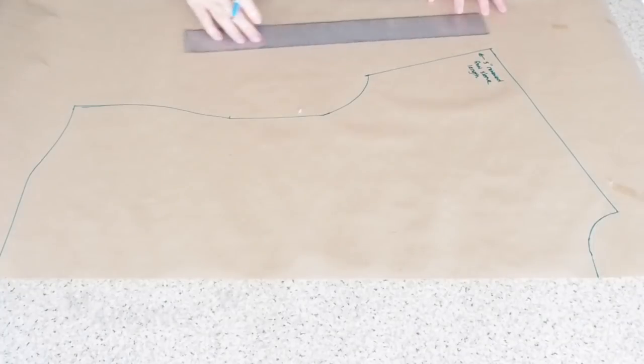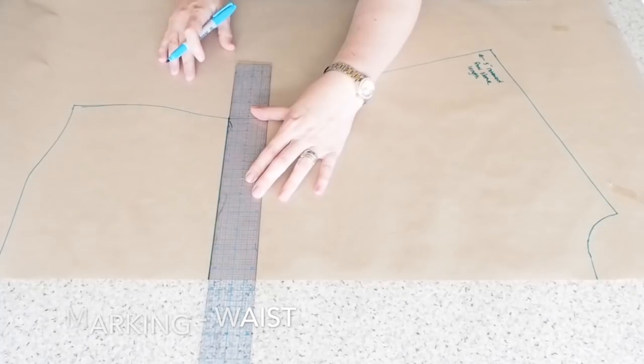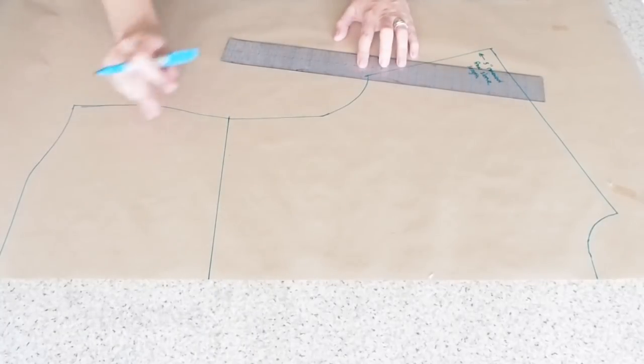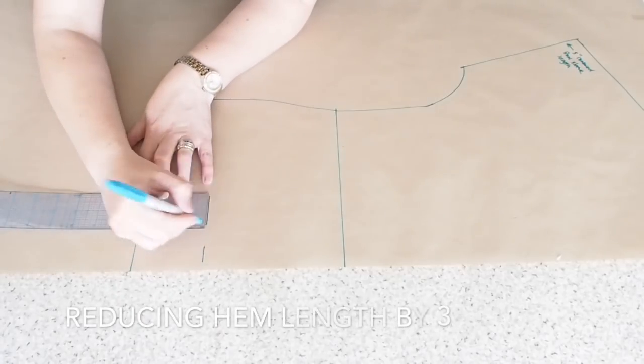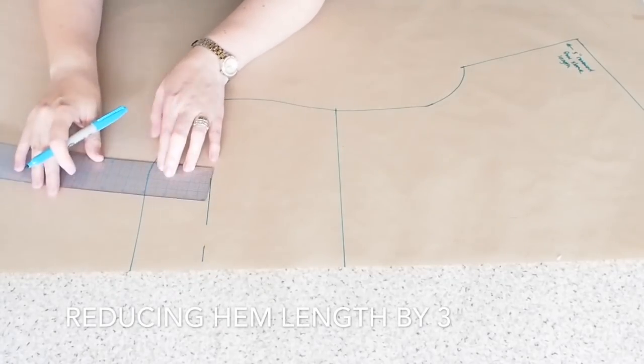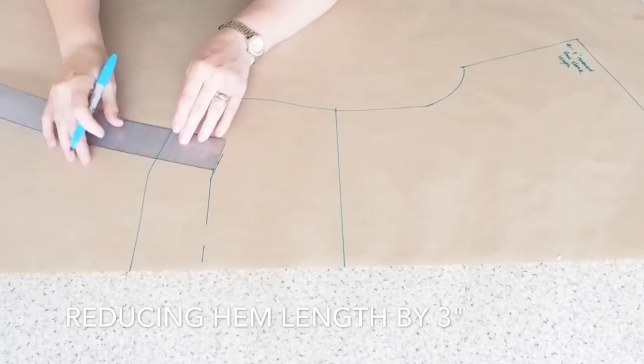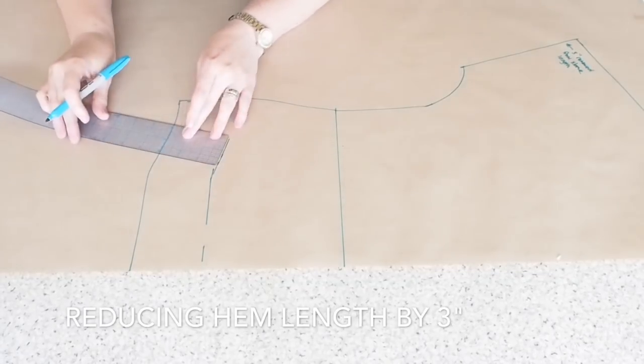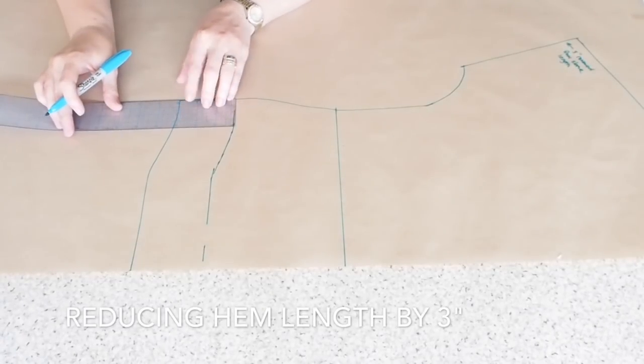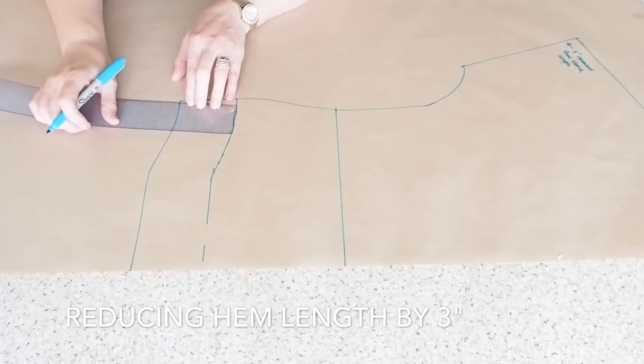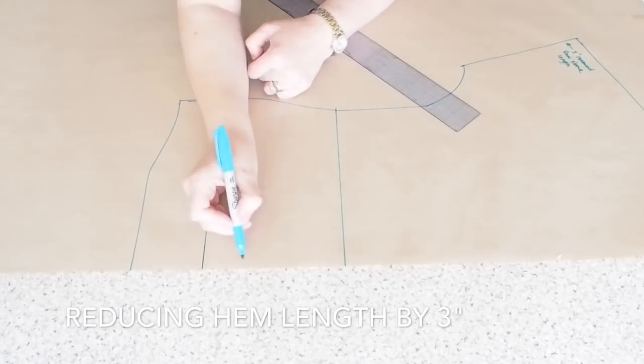Just drawing in my waist. And now I want to take a few inches off the length of this one. So I'm measuring up from the hem three inches and marking in my new hem. So that's that done. So three inches off the hem.